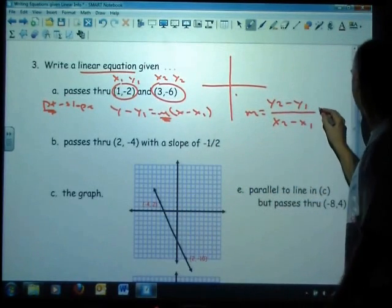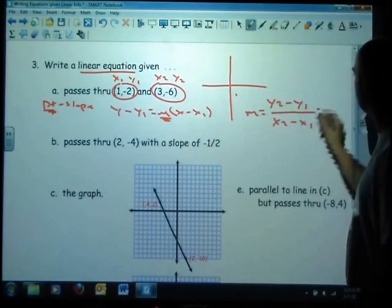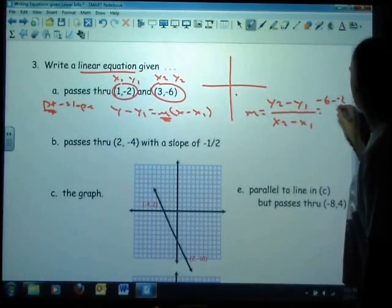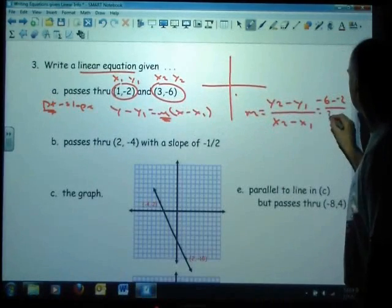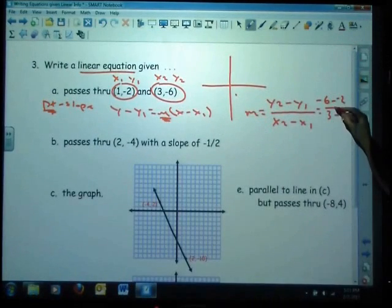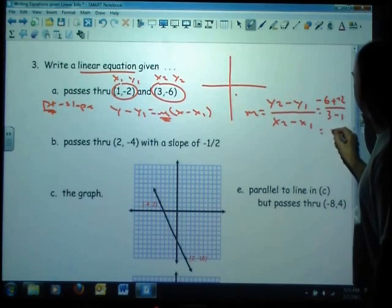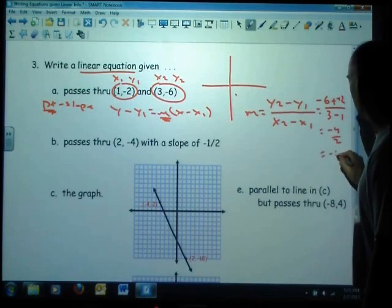So let's try that. So in this particular problem, y2 would be negative 6 minus y1 is negative 2, over top of 3 minus 1. This double negative makes this a positive. So it looks like I've got negative 4 divided by 2, which is better known as negative 2.